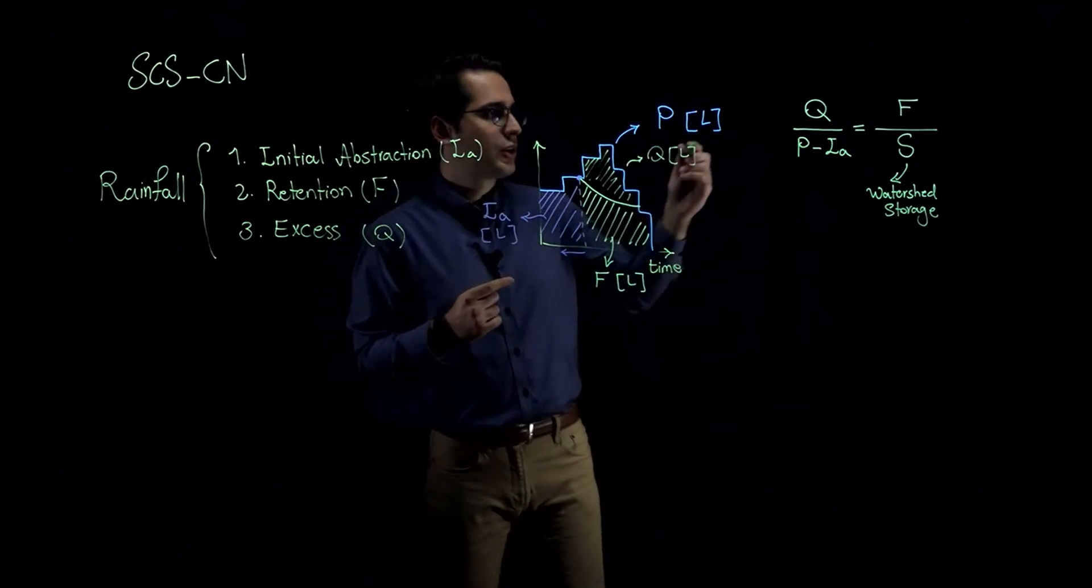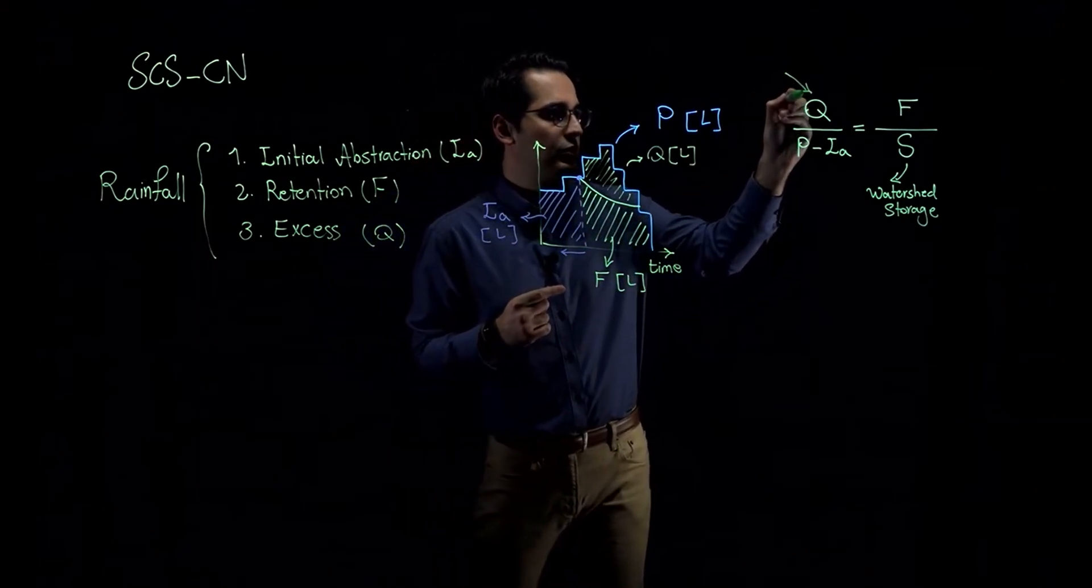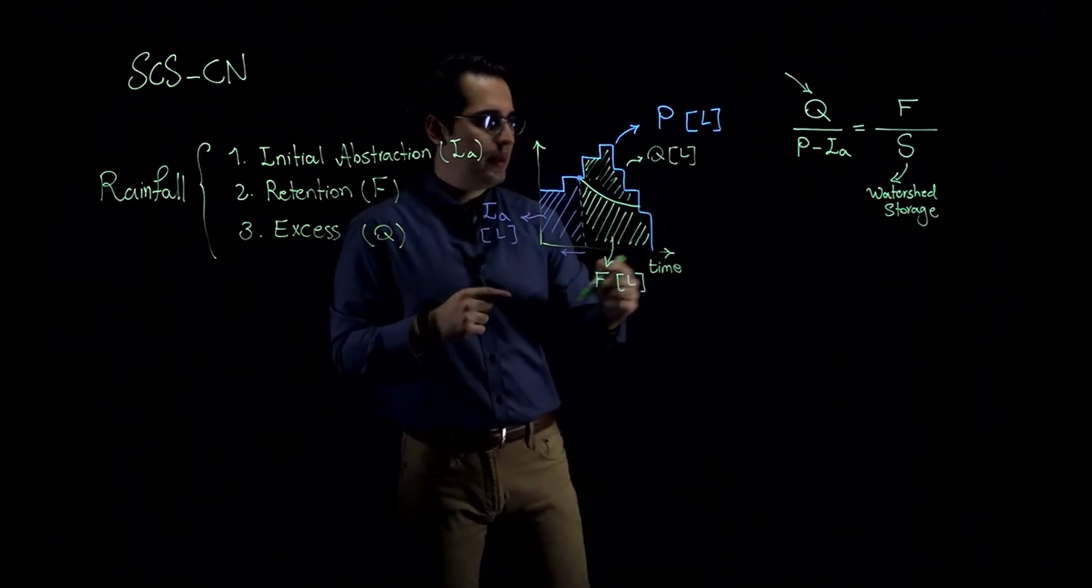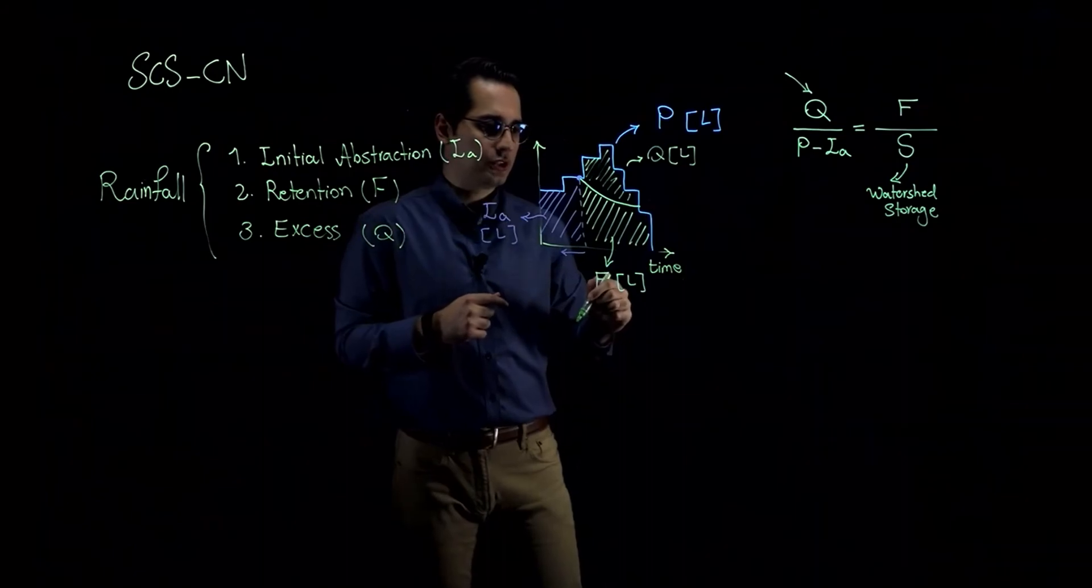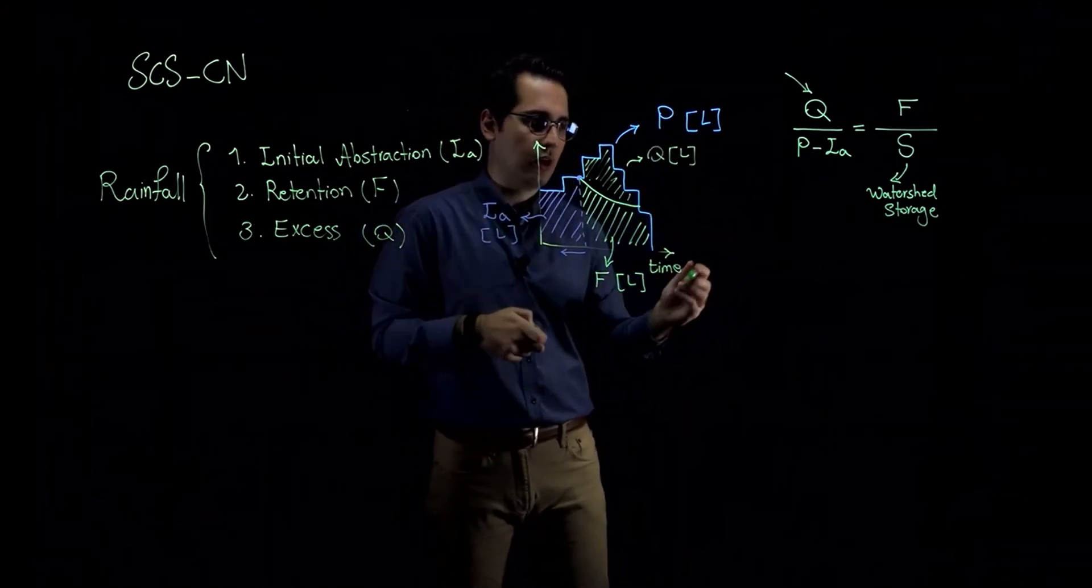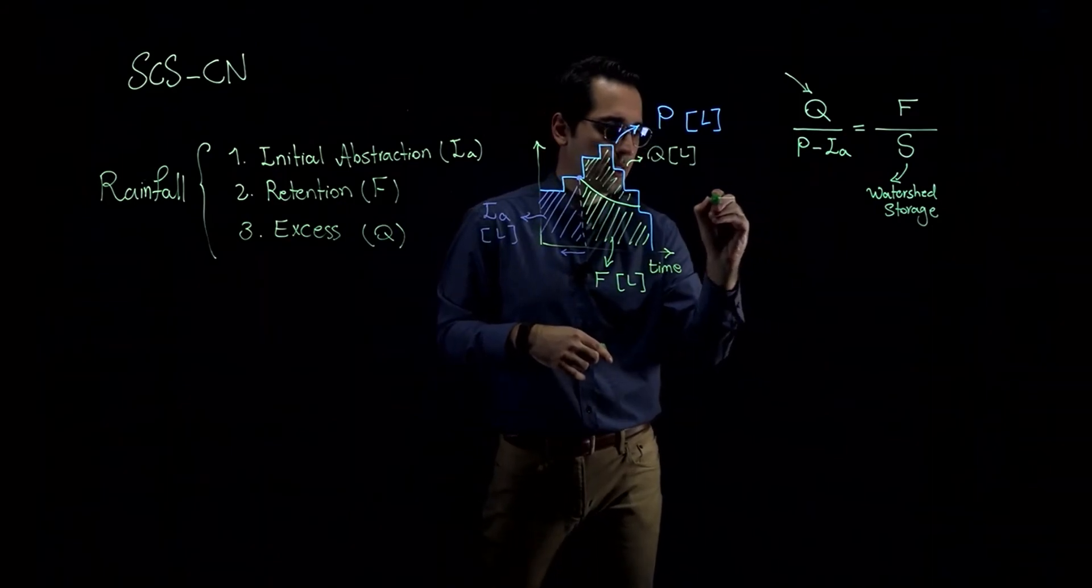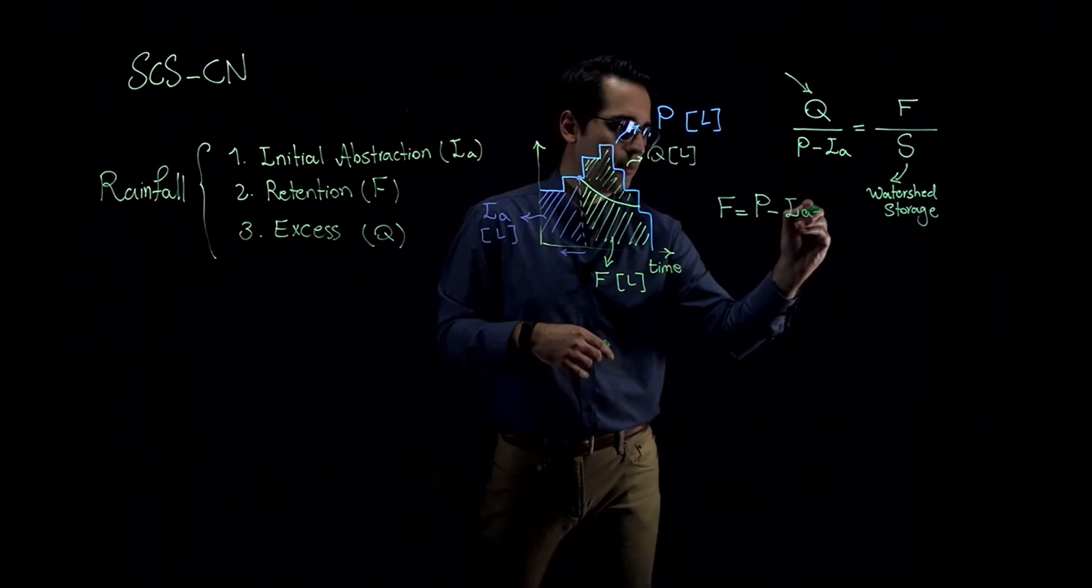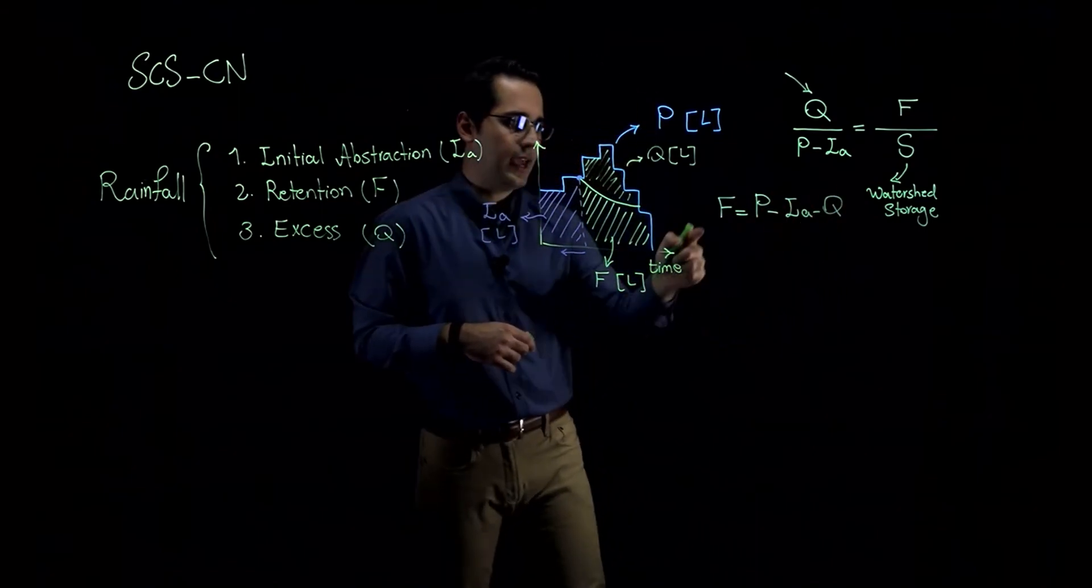Now, we are going to find Q, right? So we need to rearrange this equation. But also, we want to eliminate F from this equation. So if I ask you, based on this graph over here, what is the value of F, you would tell me that F is equal to precipitation minus initial abstraction minus Q, right?